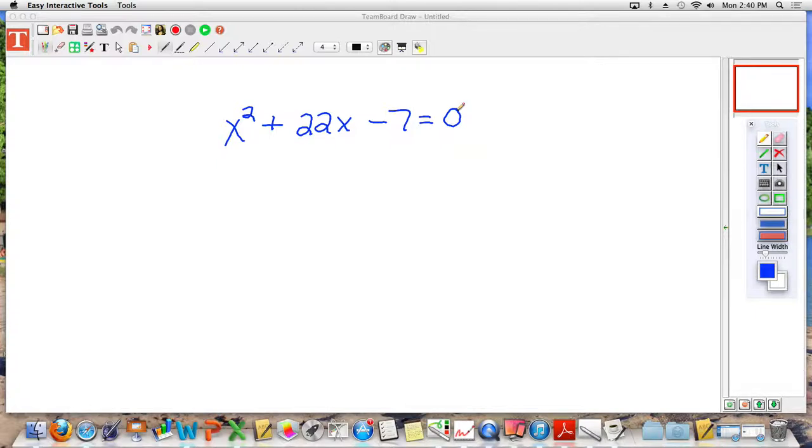Same process as before. We need to get rid of that minus 7, we need that empty space there. So how do we get rid of a minus 7? We add 7. So I add 7 to the left, which means I add 7 to the right. So I am left with x squared plus 22x, I am going to leave my space, equals 0 plus 7 is 7.